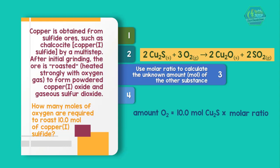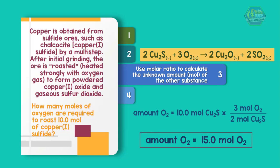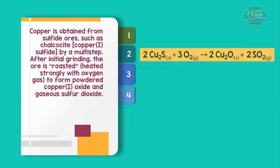From the balance equation, the molar ratio that we need to use is 3 moles O2 per 2 moles Cu2S. So we have 10 moles Cu2S times 3 moles O2 divided by 2 moles Cu2S equals 15 moles O2.